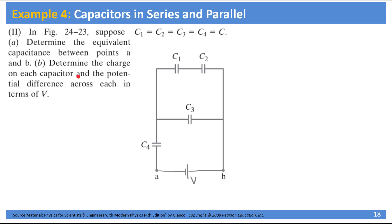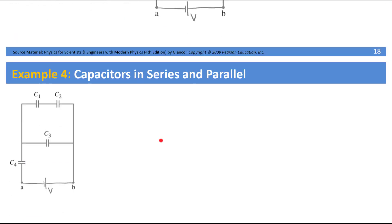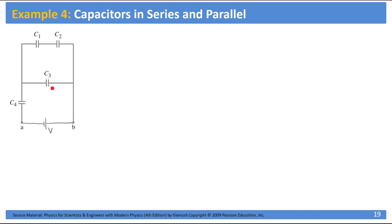Now, in order to be able to calculate the equivalent capacitance, we need to first identify which capacitors are connected in series and which are connected in parallel. When you look at this circuit, you can easily see that C1 and C2 are connected in series because they are on the same branch. Whatever you have here is simply in parallel with C3 because they are on different branches where the potential difference across them are equal. And finally, whatever you have here is in series with C4.